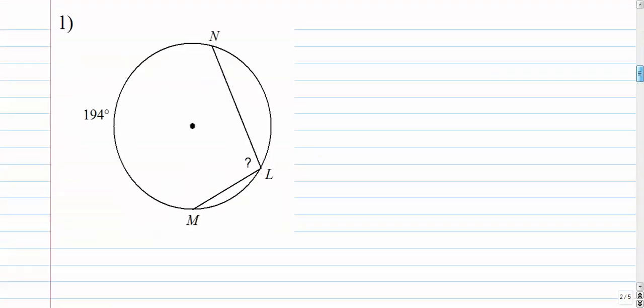Couple examples. Number one. In example number one, we are looking for the inscribed angle. We're given the arc it opens up to. This is the intercepted arc. 194.